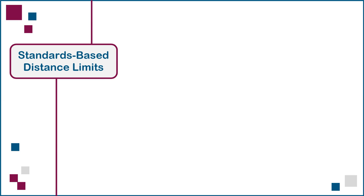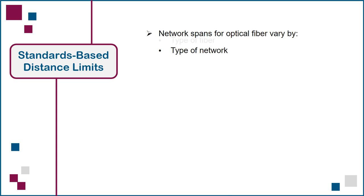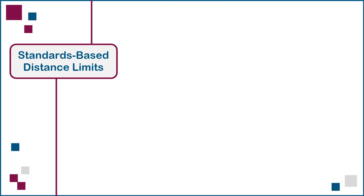Next, we'll review the standards-based distance limits for optical fiber cabling channels, which vary by both network type as well as by type of fiber used. Unlike twisted pair copper cabling systems with their well-established 100-meter maximum channel length, the network spans for optical fiber vary by type of network, type of fiber, and even by the wavelength used over a given type of fiber. The designer must therefore match the capabilities of the proposed fiber links to the requirements for current and future network implementations.